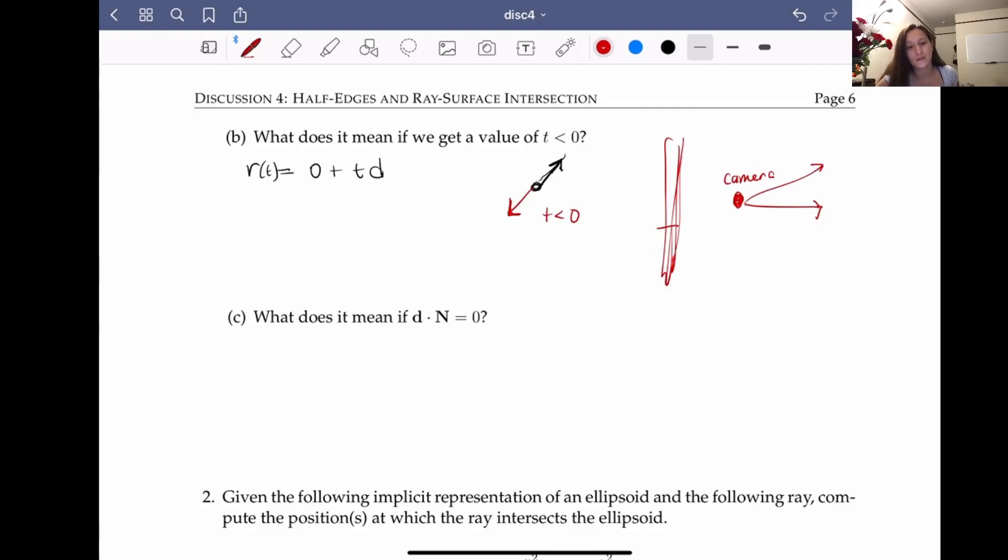Okay, so what does it mean if D dot N equals 0? So if we think about what a dot product of two vectors means, if D dot N equals 0, this must mean that they're perpendicular. I apologize if I spelled that wrong.